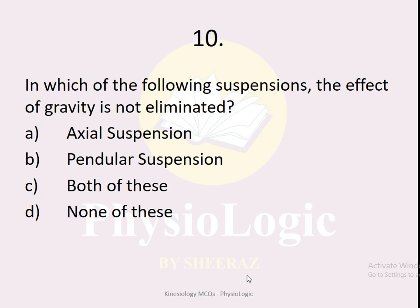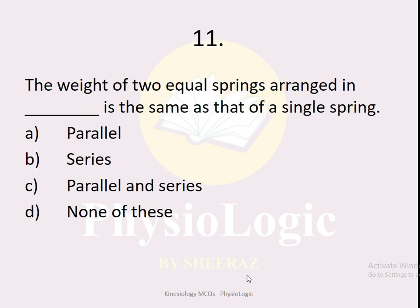MCQ number ten: in which of the following suspensions is the effect of gravity not eliminated — axial suspension, pendular suspension, both, or none? The correct option is pendular suspension. In axial suspension, the body is suspended by the axis of movement and moves in a horizontal, gravity-free plane. In pendular suspension, the body moves against gravity, so the effect of gravity is not eliminated. If asked which suspension eliminates gravity, the answer would be axial suspension.